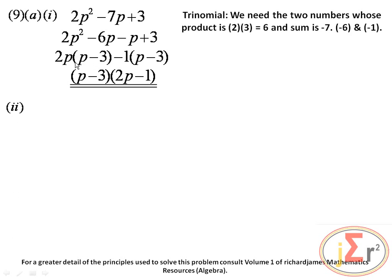We find the common factor of p minus 3 in both groups, so p minus 3 is the common factor. The second bracket contains 2p minus 1. Richard James' mathematics resources can be consulted to justify placing 2p minus 1 in the other bracket, as there is a serious principle behind it that justifies its correctness.